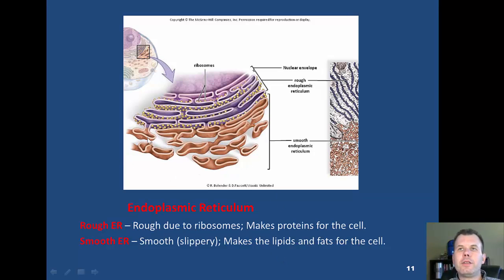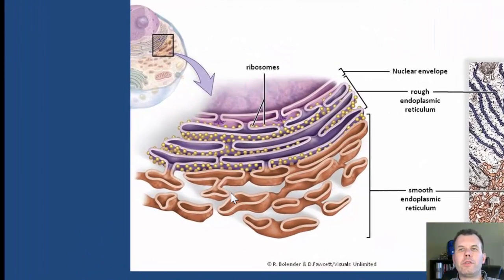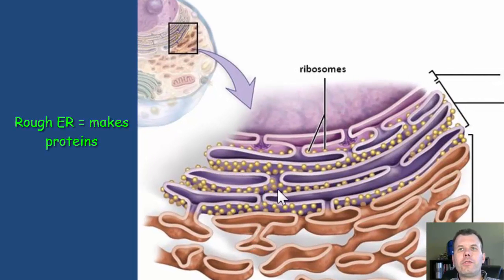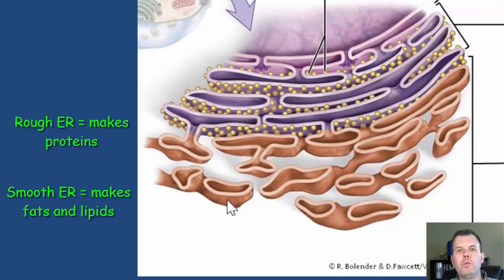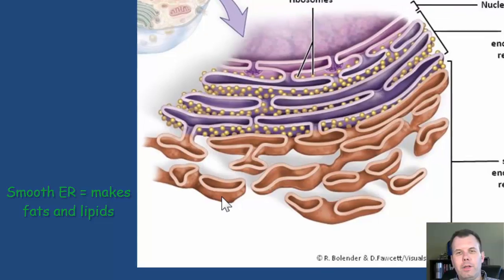There are two types of endoplasmic reticulum. The rough ER has ribosomes on it and is responsible for making proteins — rough ER makes proteins. The smooth ER has no ribosomes; think smooth and slippery — this one makes lipids and fats. So rough ER makes proteins, smooth ER makes lipids or fats.